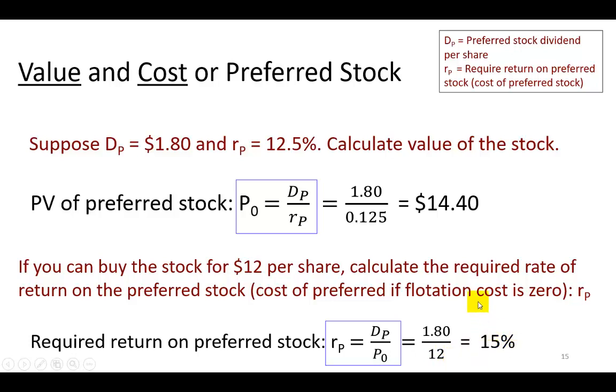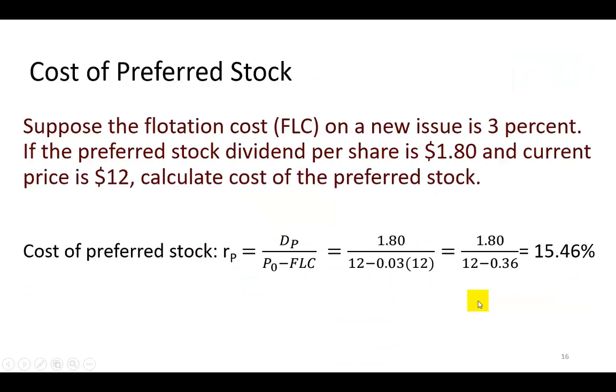Now though, we know that firms typically go through an investment banker who would charge them a flotation fee to sell their securities. So in this example, the investment banker is going to charge 3% on the flotation of any new issue of preferred stock, and so 3 cents on any dollar it receives will go into the pocket of the investment banker.